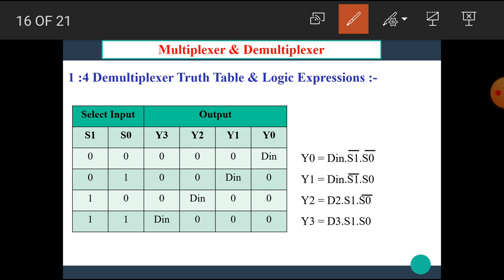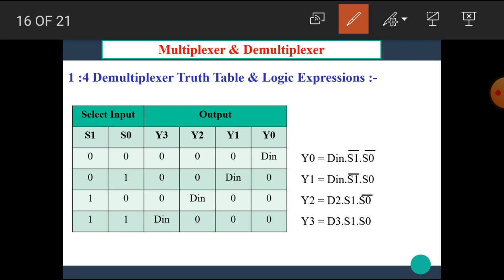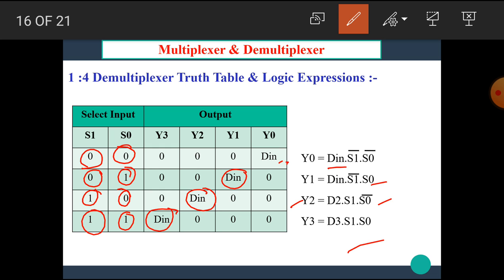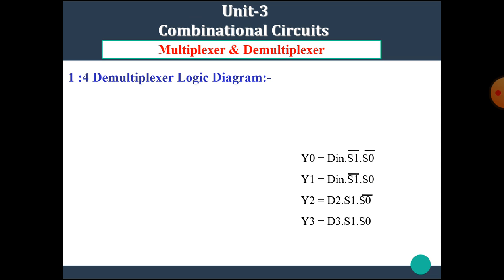The truth table for the 1-to-4 DEMUX has select inputs S1 and S0, and four outputs Y3, Y2, Y1, and Y0. When S1 and S0 is 0-0, output Y0 is selected; when the combination is 0-1, Y1 is selected; when the combination is 1-0, Y2 is selected; and when the combination is 1-1, Y3 is selected. From this, the logic equations are: Y0 = D_in·S1 bar·S0 bar; Y1 = D_in·S1 bar·S0; Y2 = D_in·S1·S0 bar; Y3 = D_in·S1·S0.